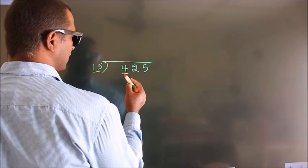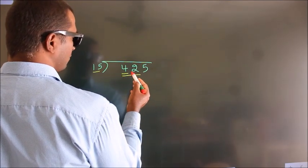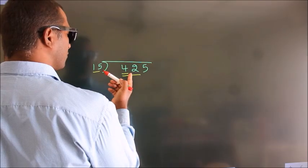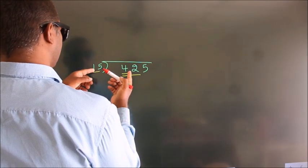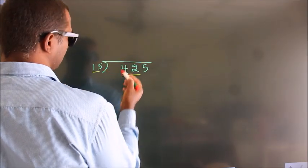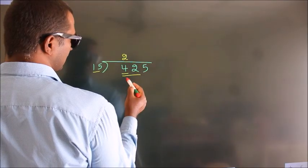So we should take 2 numbers: 42. A number close to 42 in the 15 times table is 15 times 2, which is 30.